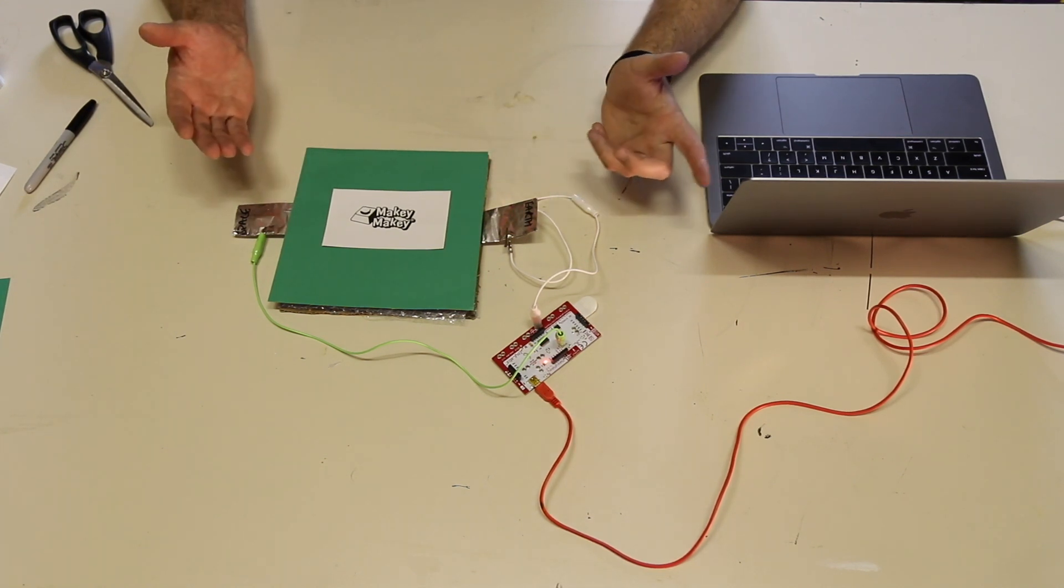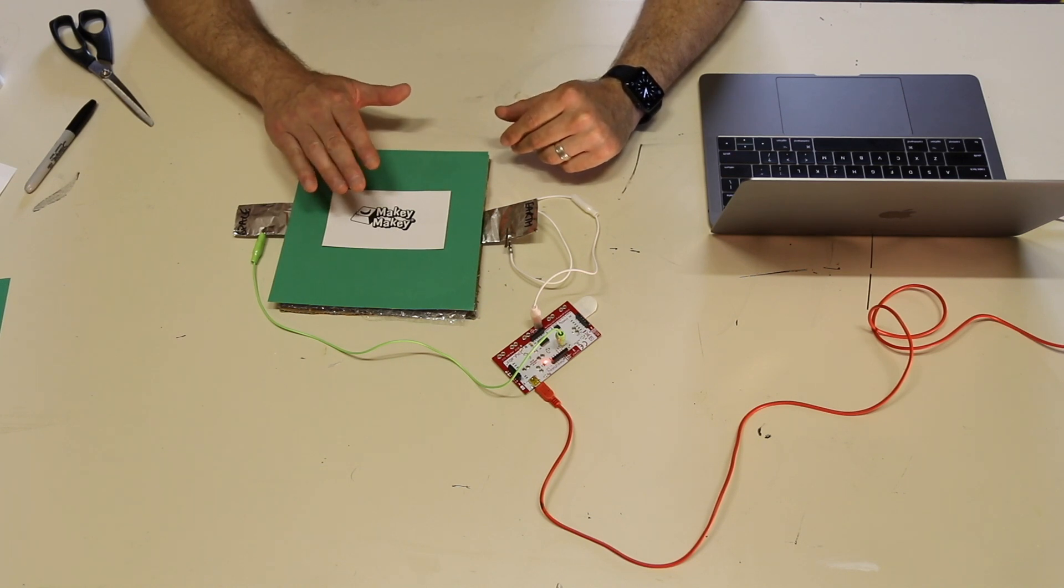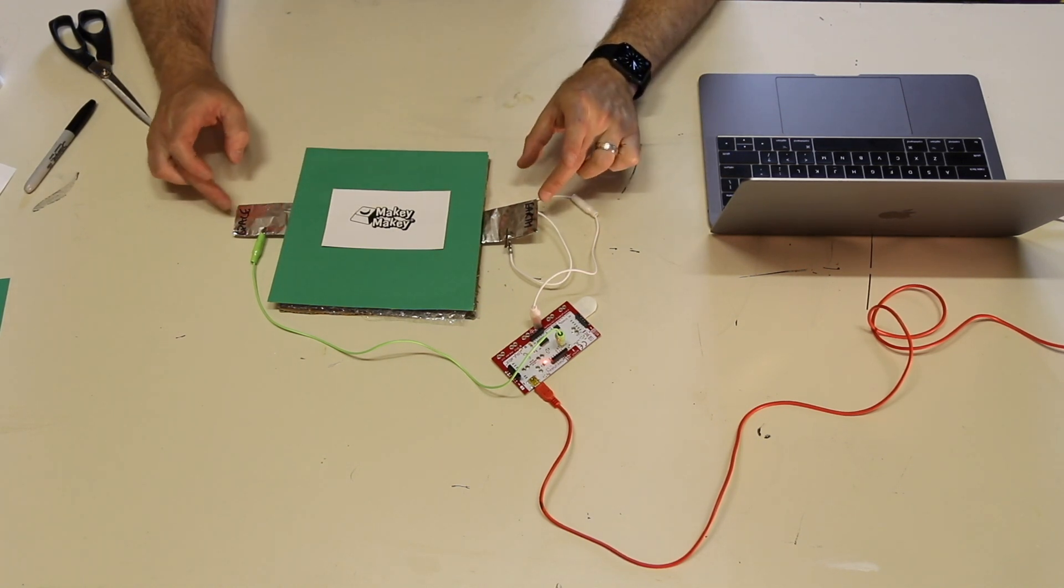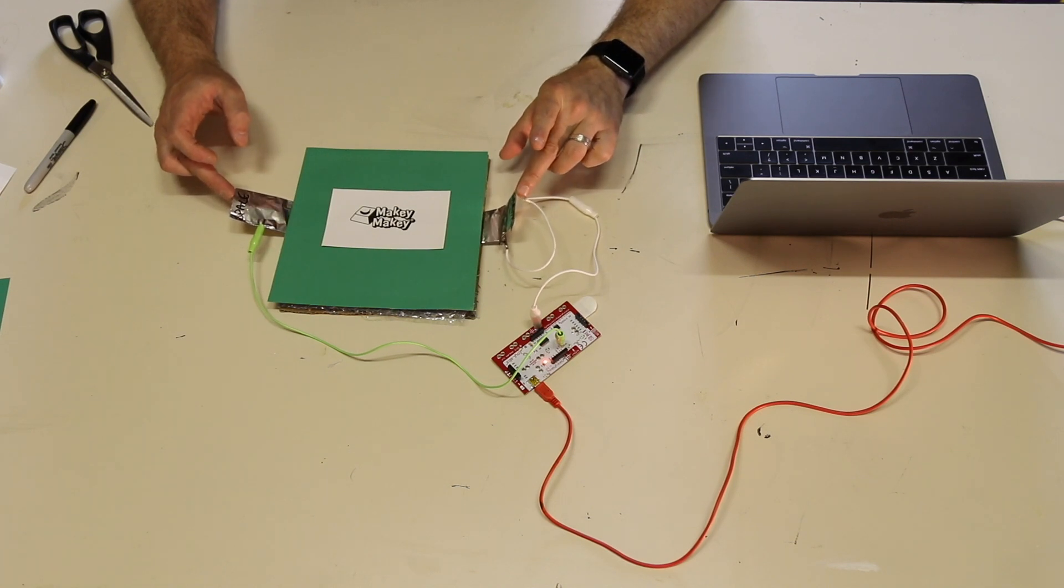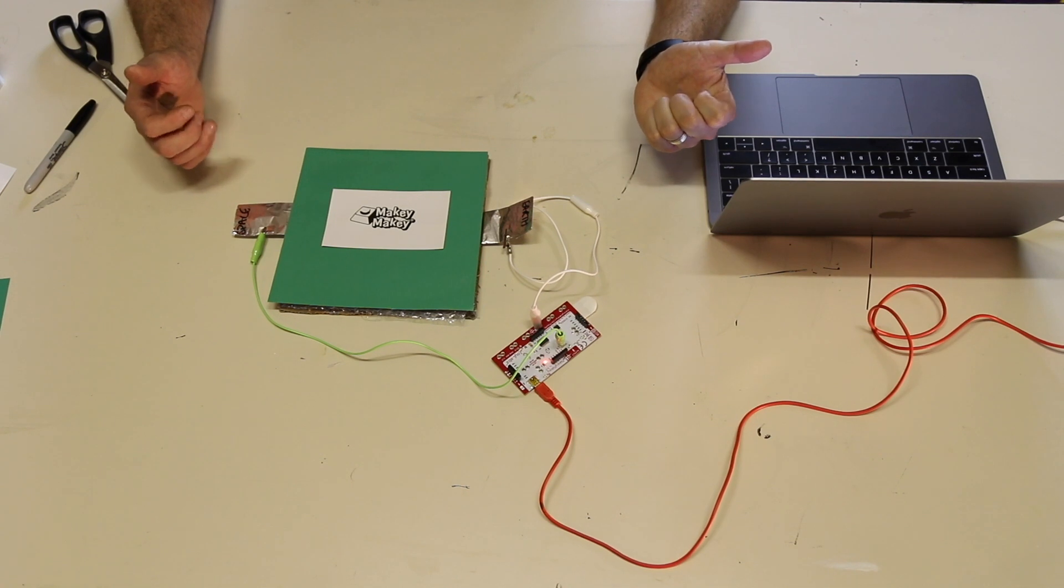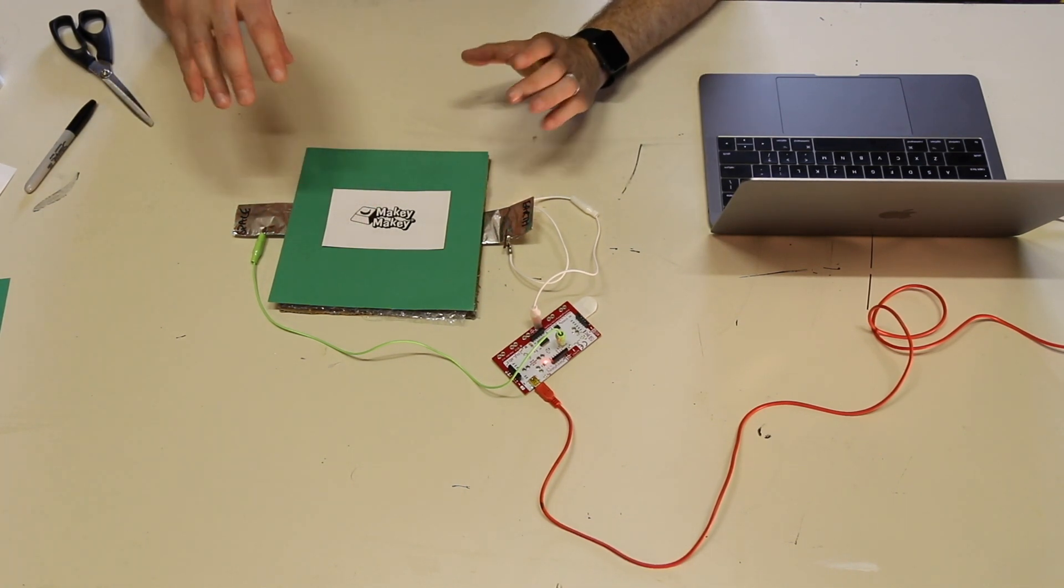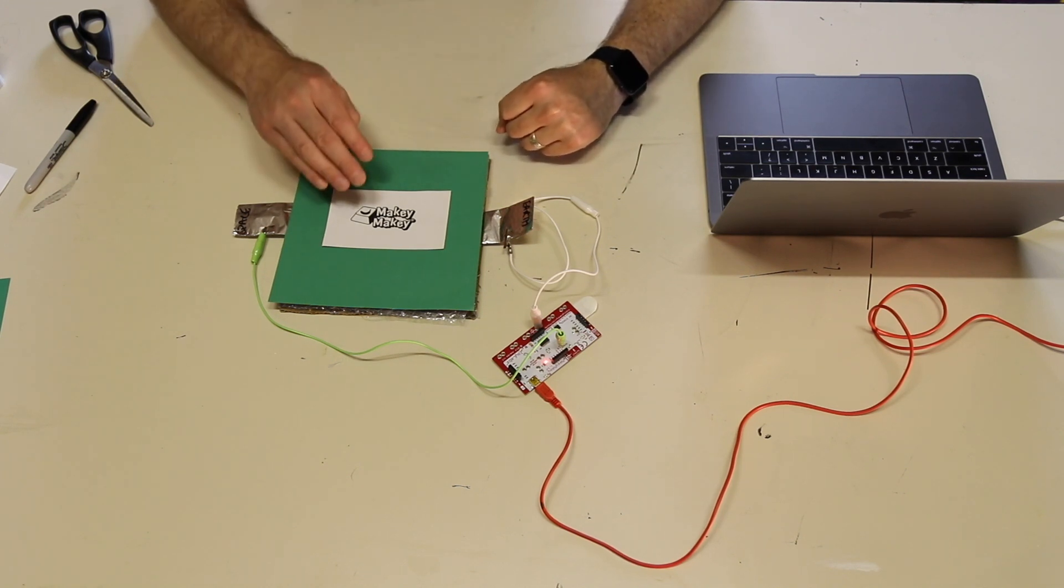And it's very simple. I've made a Scratch project to make the cat sound every time you press space bar. And because I've got the earth and the space I'm joining together to create the circuit, I don't need to hold earth myself because the pressure that you place on this switch connects that circuit together when you press it.